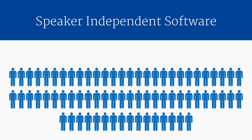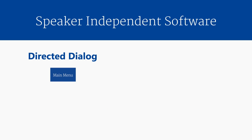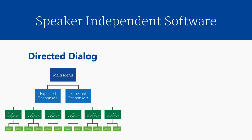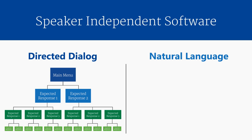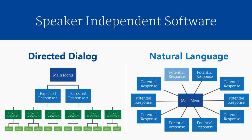Within the realm of speaker-independent software, we can further classify speech recognition applications by the types of things users are expected to say. The most common speech application is called a directed dialogue, where users are directed to speak short phrases in order to accomplish specific tasks. Less common are natural language applications, where users speak more naturally to accomplish a wide range of goals.